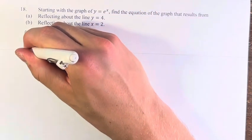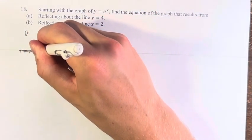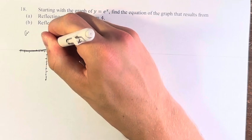We have the point 0, 1 and 1, e. Other than that, it looks a little bit like this, where it's approaching 0, and it goes through these two points, and then it goes off to infinity.